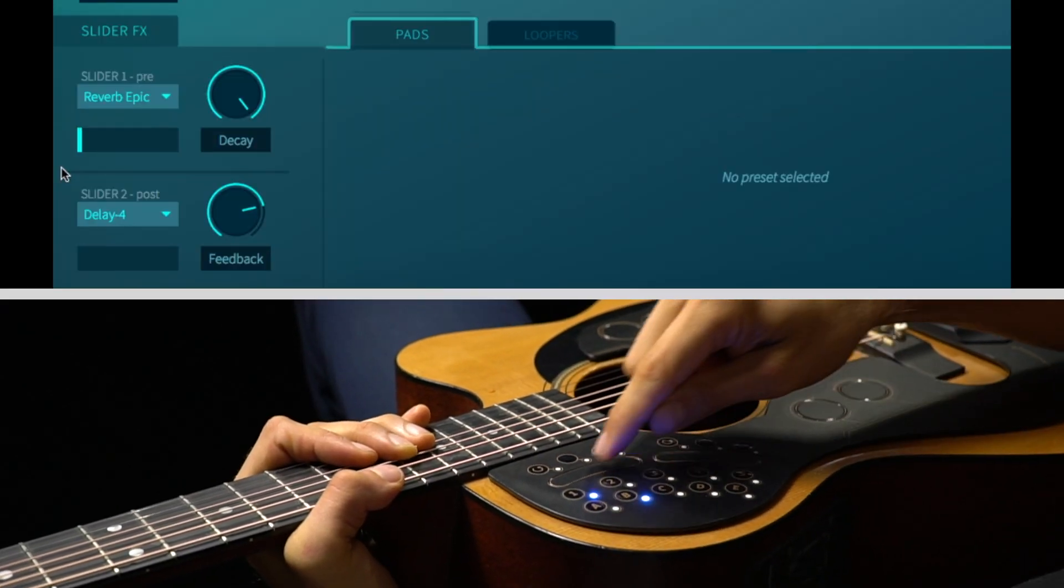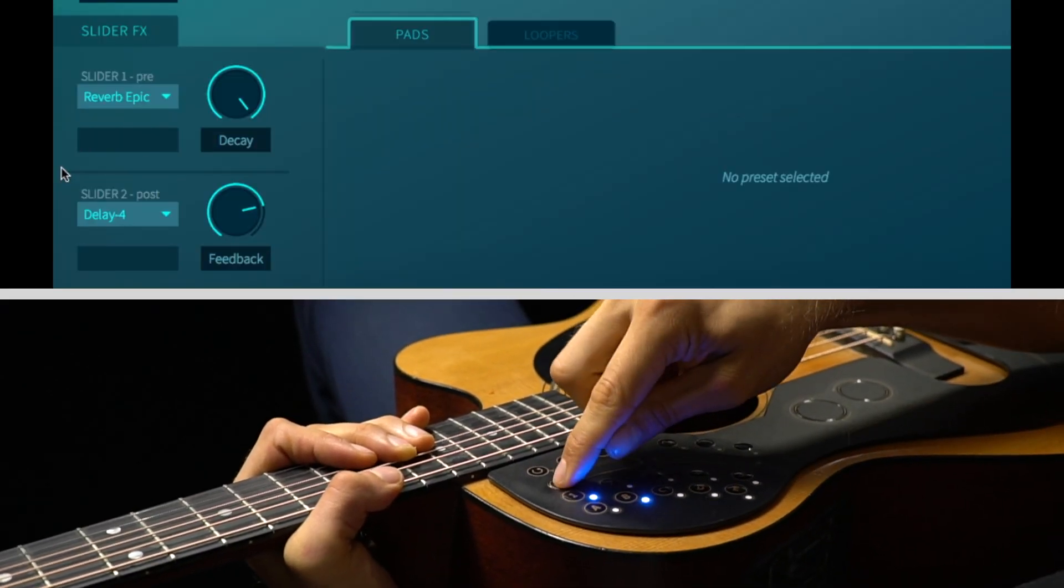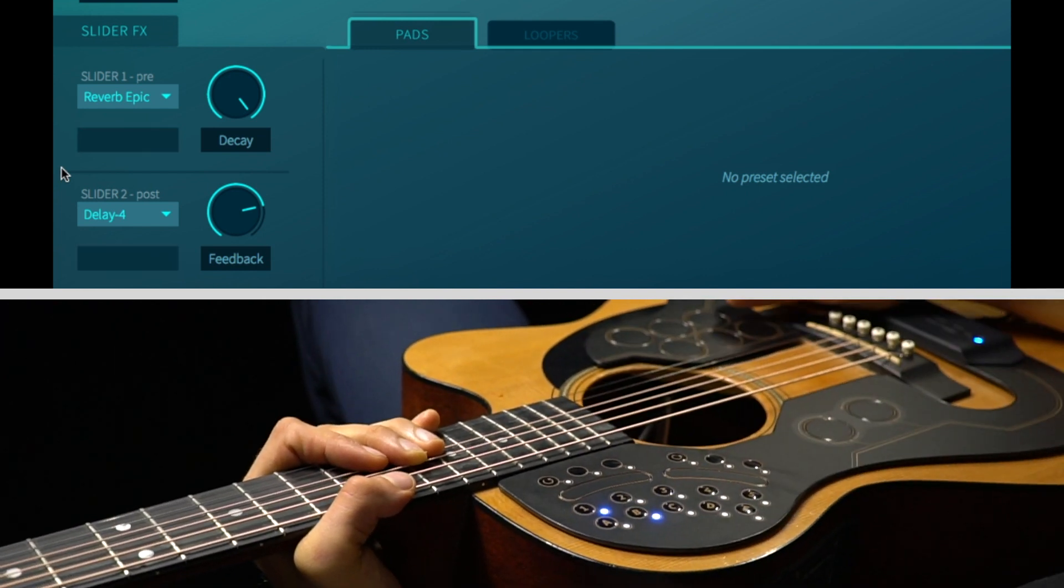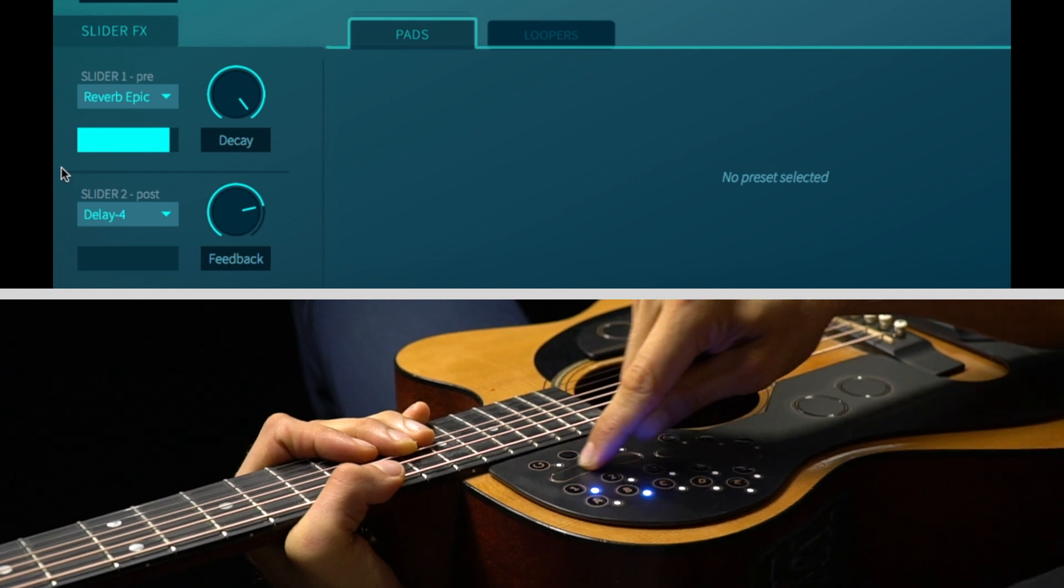This section on the bottom left allows you to assign effects that are controlled with the two sliders on Agpad. Watch the video down below for more information on effects and sliders.